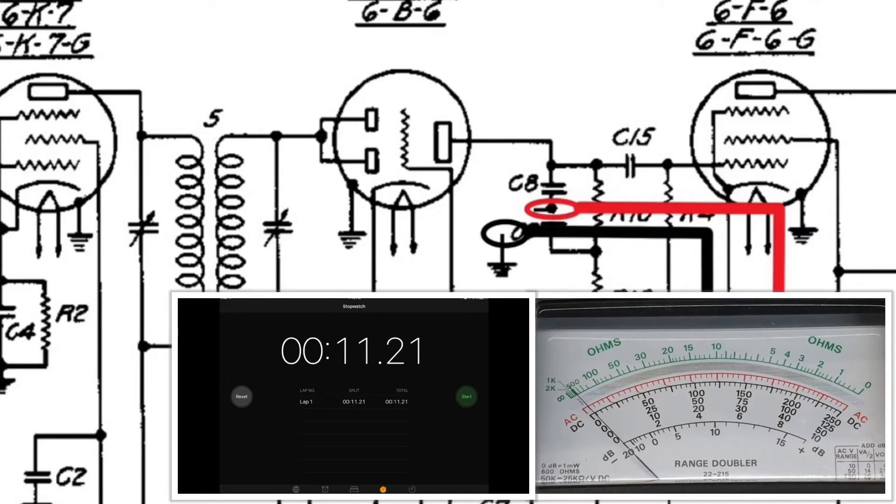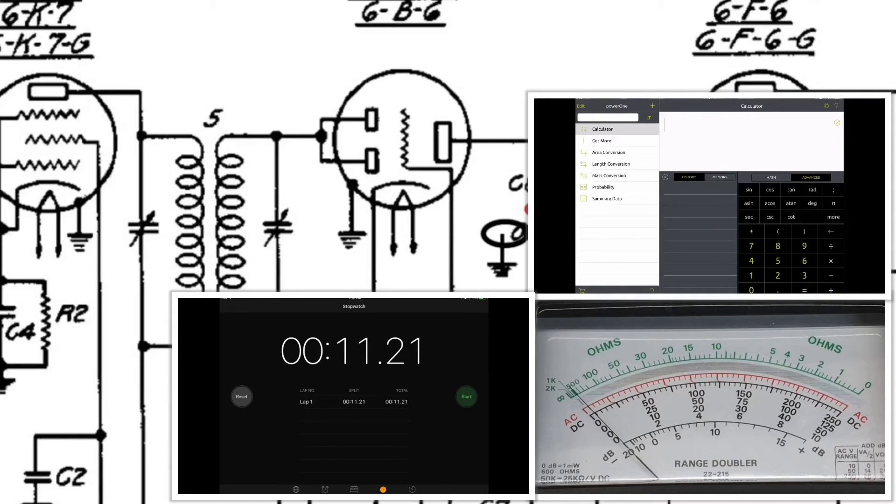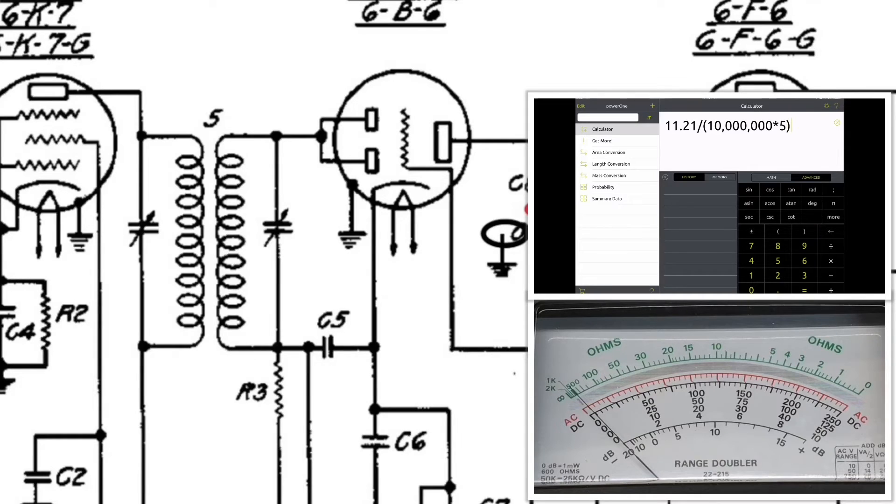If you're looking at the calculator to compute the approximate capacitance value, all I'm doing is taking the time in seconds here and I'm dividing that by my meter resistance. In this case it's 10 meg or 10 million. Multiply that by 5. Then you take the time and divide it again by the sum of the meter resistance times 5. Then I'm going to multiply that by 1 million to get this back to microfarads. And you can see what we come up with there, the 0.2242 microfarads.